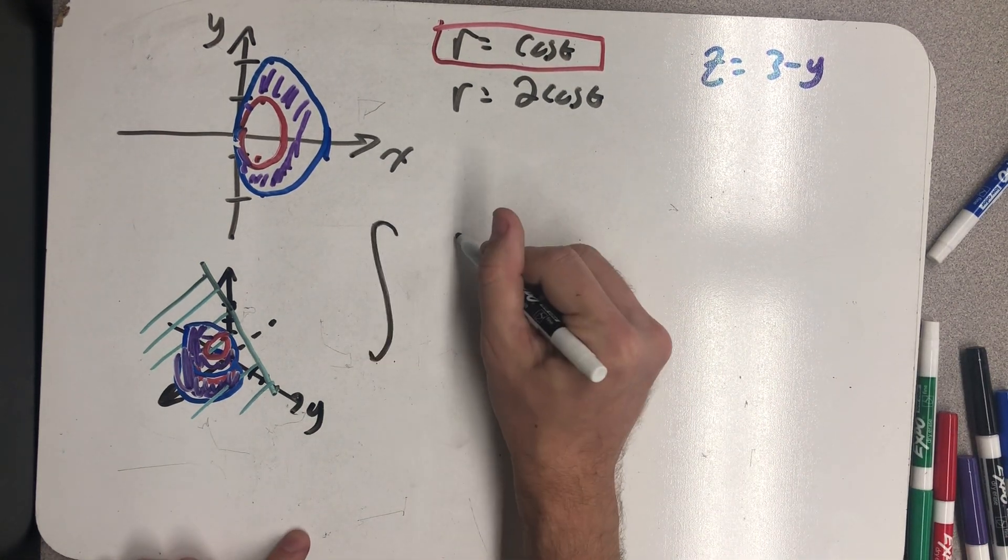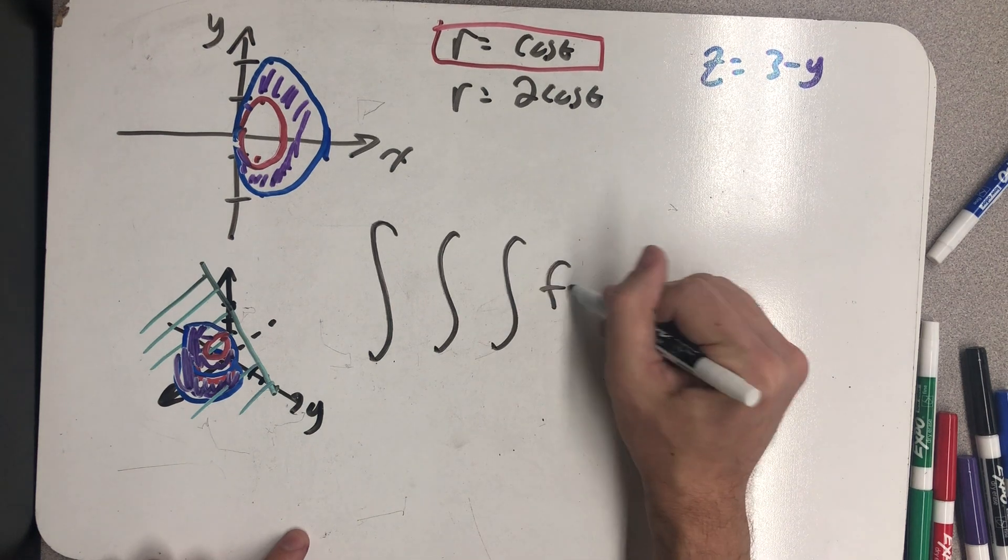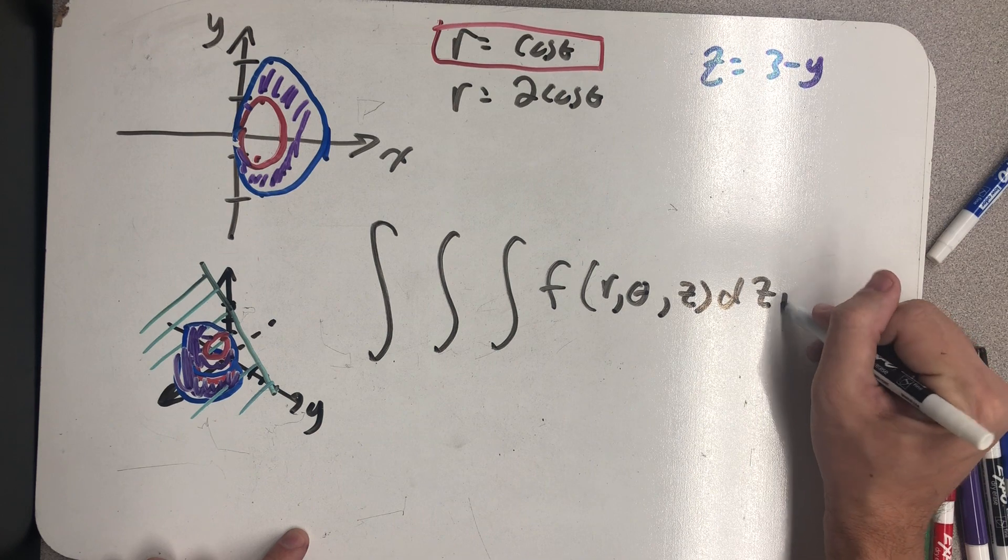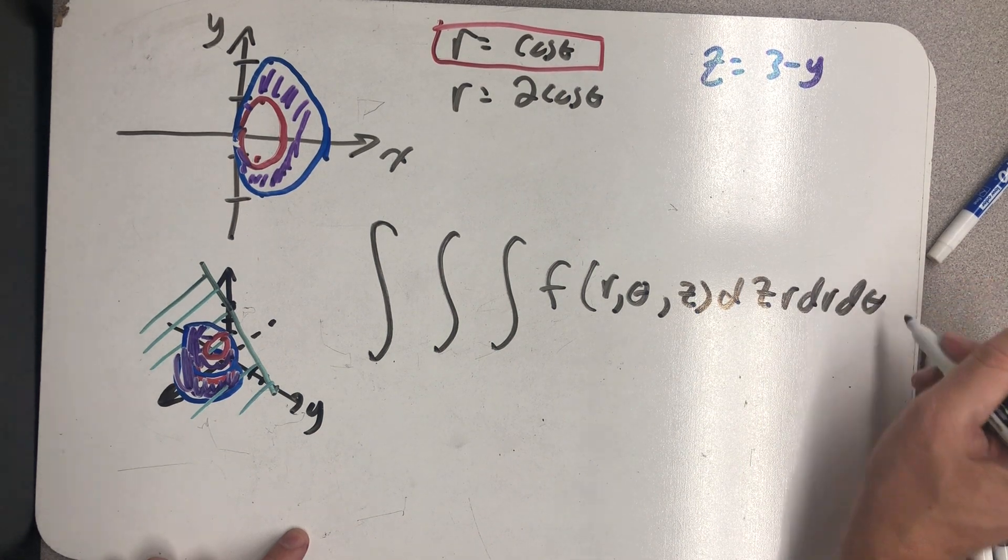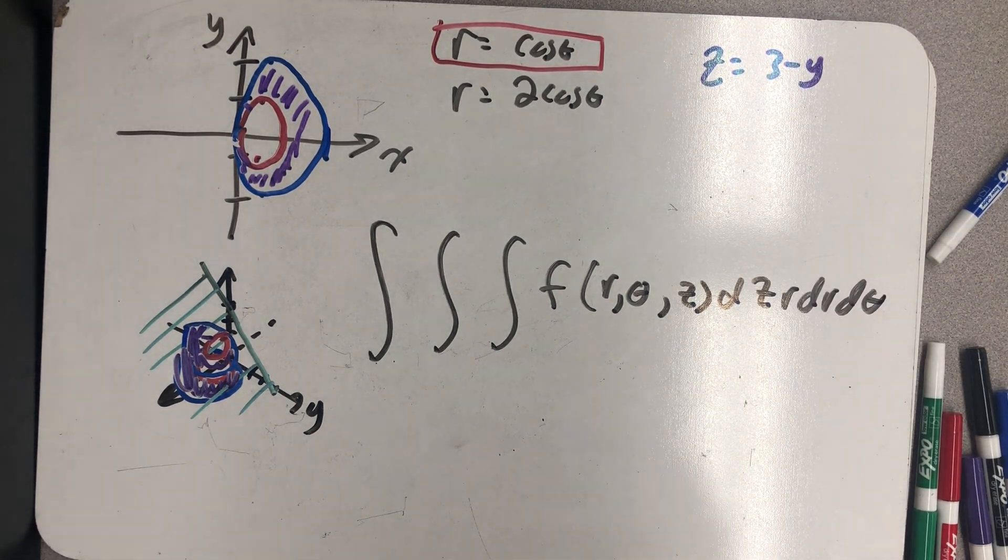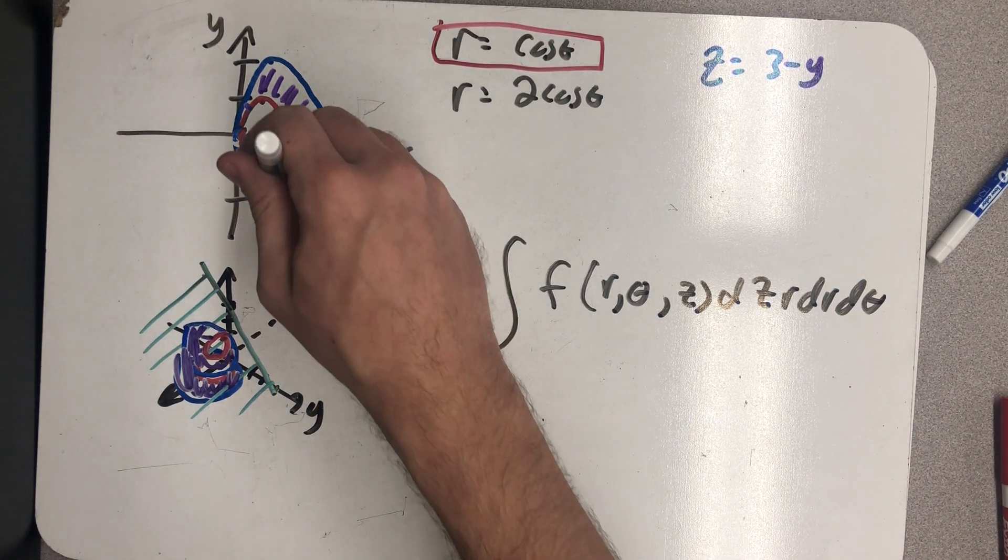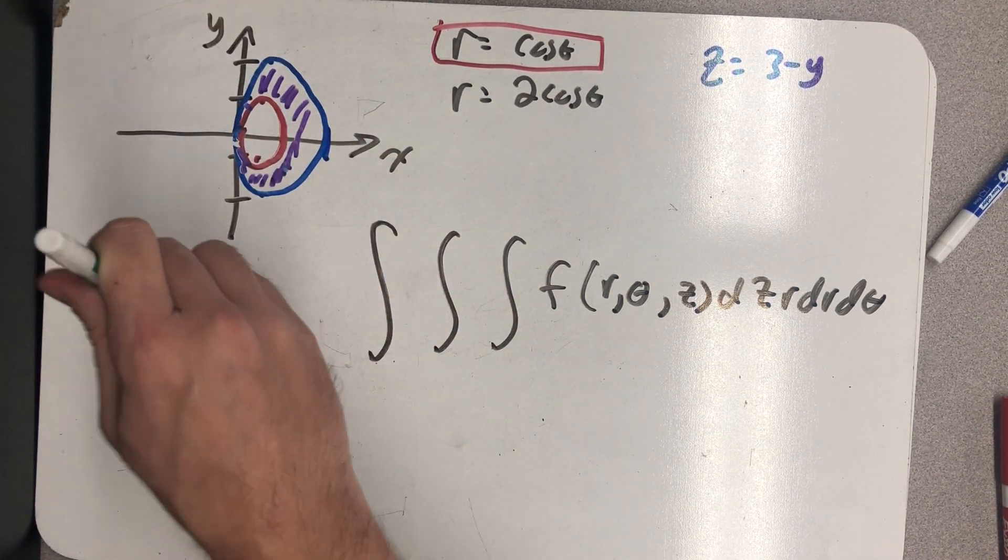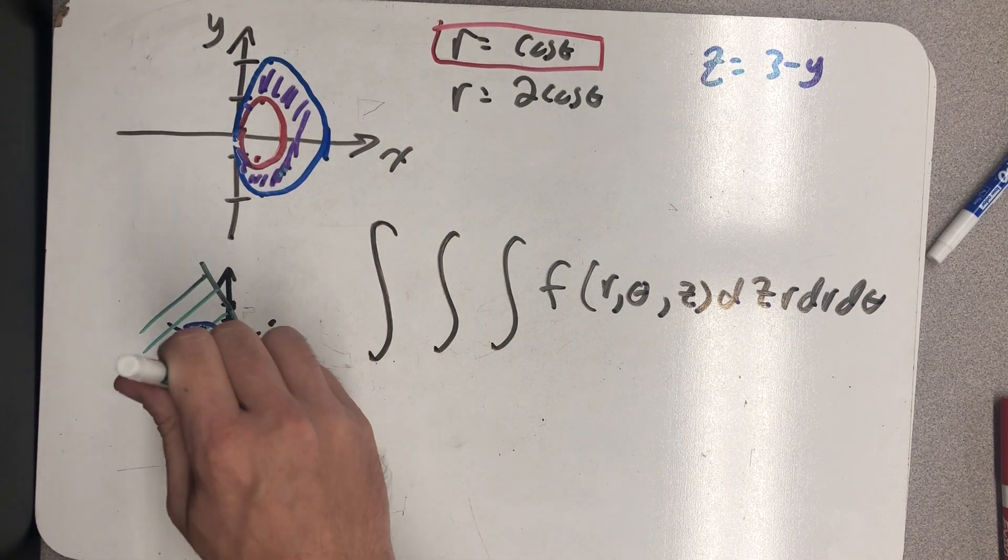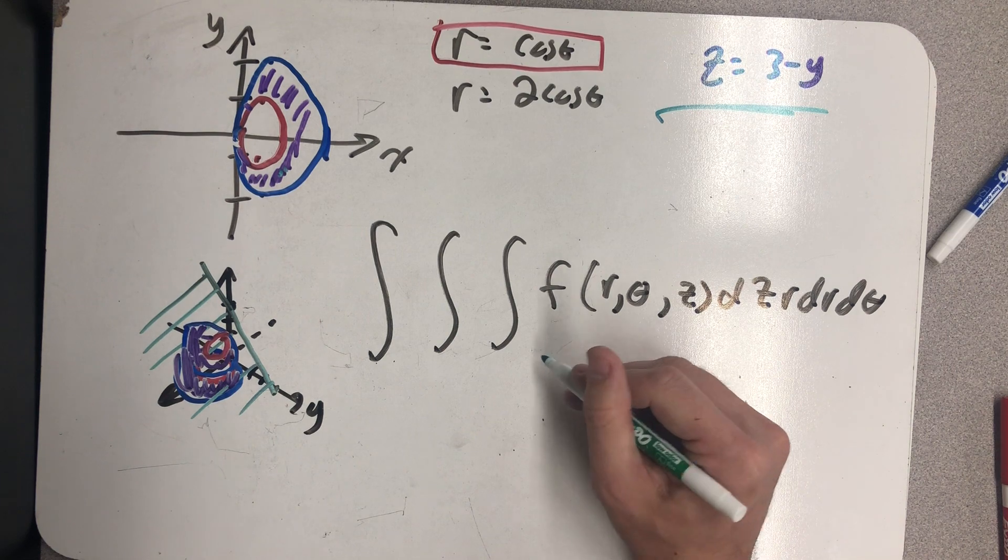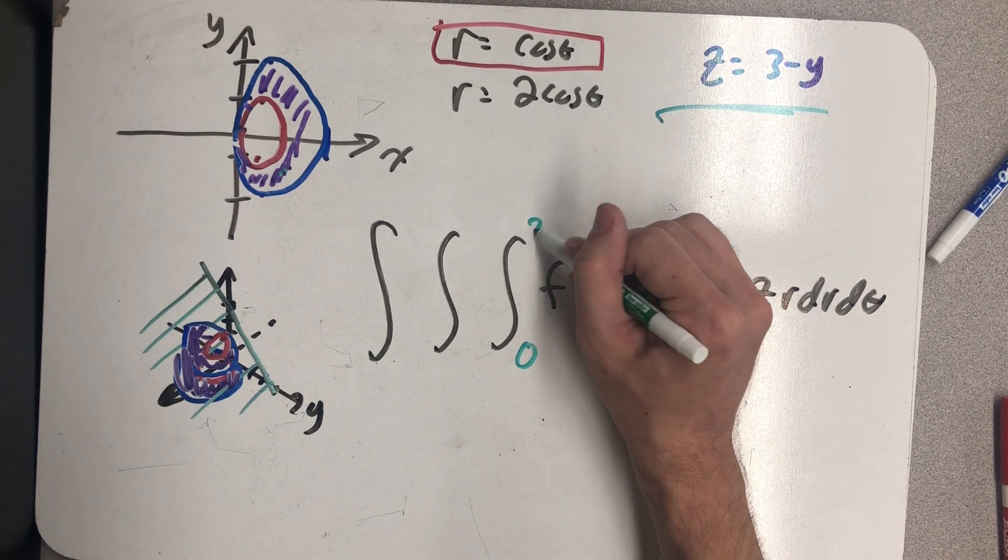All right, so I'm setting up a triple integral for some integrand that wasn't given to me. This was only about finding the bounds. So dz r dr d theta. Well, in the z-direction, like we talked about, our ray would start in the xy plane and would go up until it hits this plane. So that would be from 0 to 3 minus y.